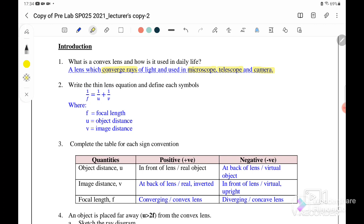Write the thin lens equation and define each symbol. So for the thin lens equation, we can use 1 over f equals 1 over u plus 1 over v, where f is the focal length, u is the object distance, v is the image distance.